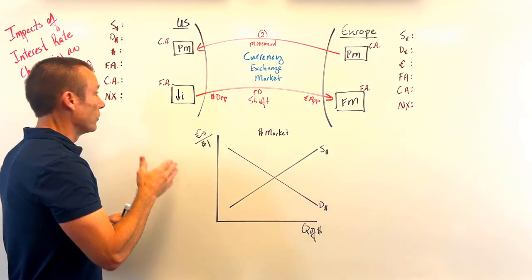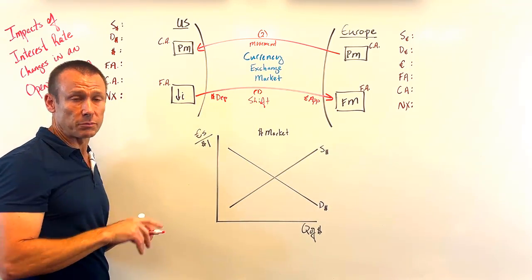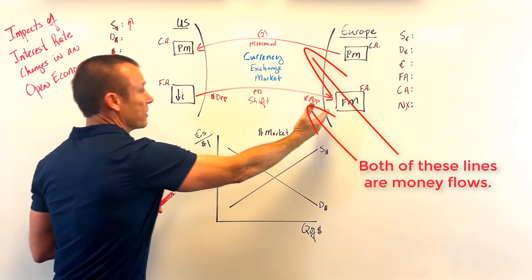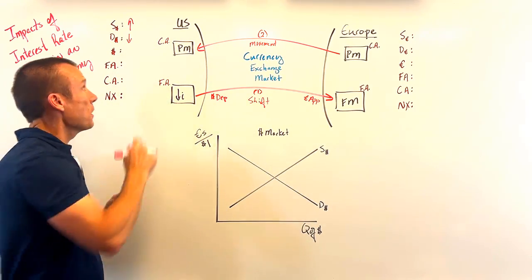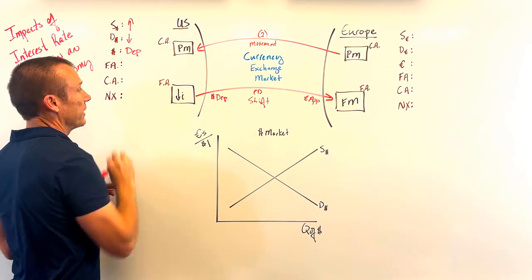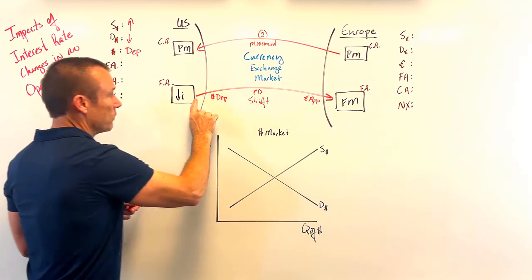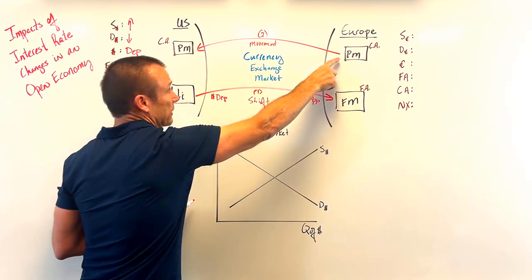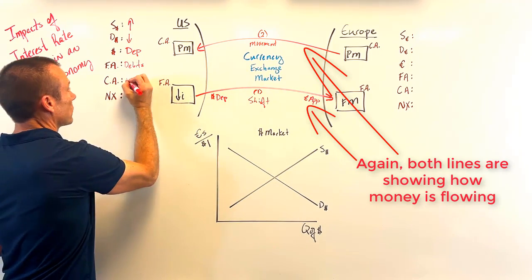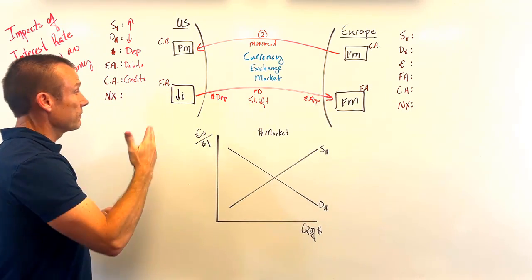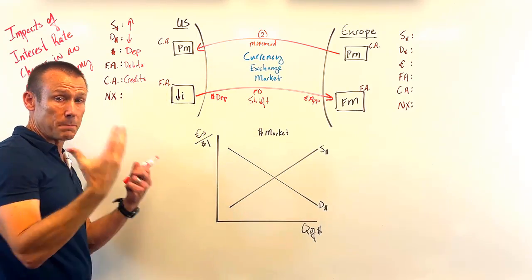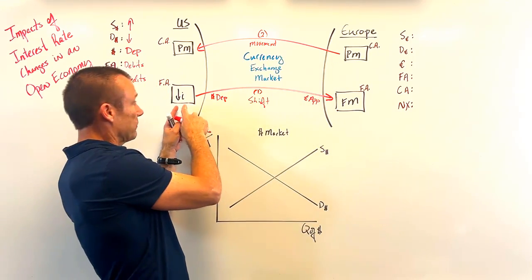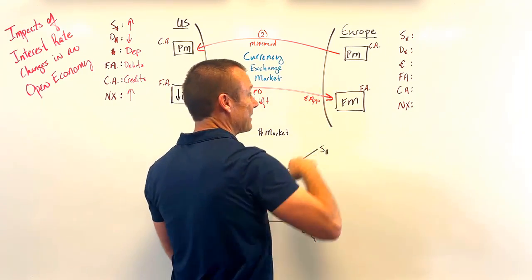When the US interest rate goes down, we get an increase in the supply of dollars heading out, and Europeans won't want to bring money here, so we get a decrease in the demand for the dollar. Both of these cause the dollar to depreciate. Money flowing out of the US financial account creates debits, moving us toward deficit, and money flowing into our current account creates credits, moving us toward surplus. Because the dollar depreciated, money comes into our product market to buy our goods, so US net exports go up.